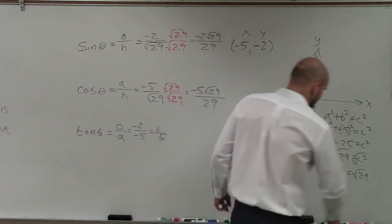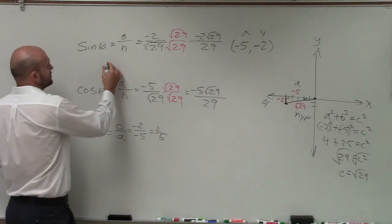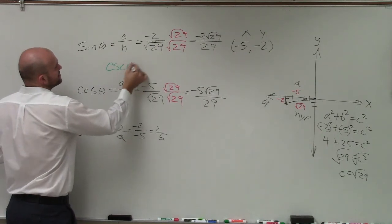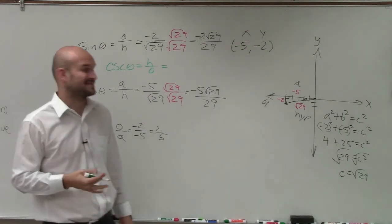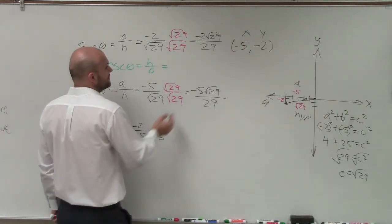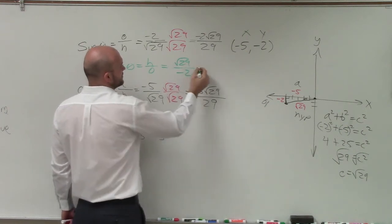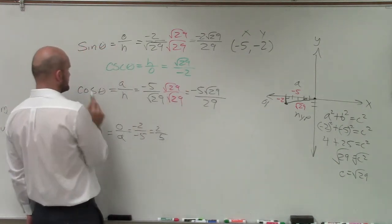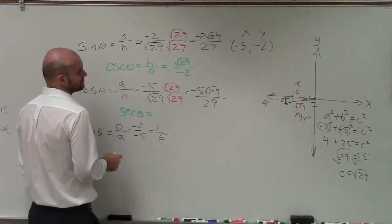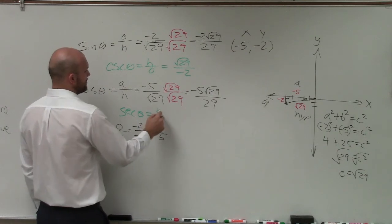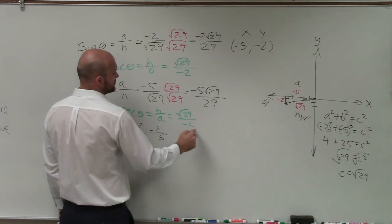All right, so I'll do green for the reciprocal functions. So the reciprocal of sine is cosecant theta. That equals the hypotenuse over opposite. And thankfully, we already did the rationalize of the denominator, because this will be nice and quick now. Now we just have the square root of 29 over the opposite side, which is negative 2. And we can't simplify anymore. The reciprocal of cosine is going to be secant of theta. So the secant of theta is going to be hypotenuse over adjacent. And the hypotenuse, again, is square root of 29 over my adjacent, which is negative 5.